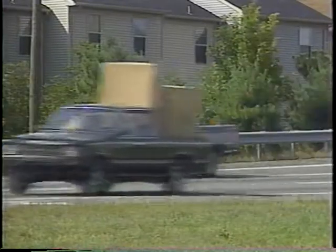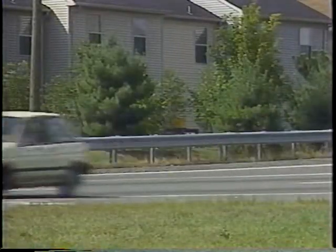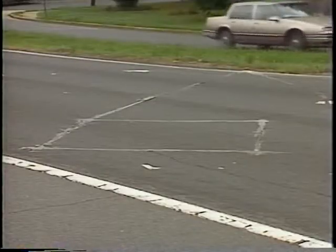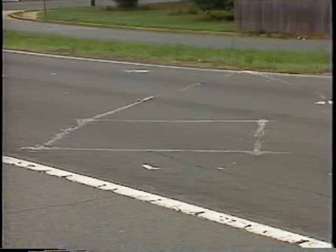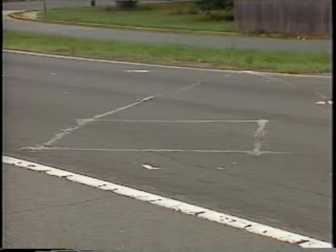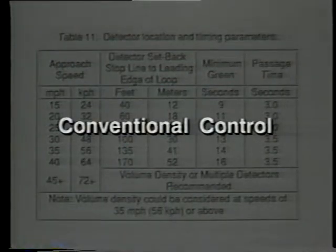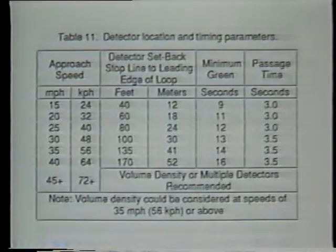In the non-locking mode, the controller forgets or drops the waiting call as soon as the vehicle leaves the detection area. Locking detection memory is associated with small area or point detectors, such as a six-by-six-foot loop detector. Often referred to as conventional control, locking memory with point detection includes a preset minimum green interval and a common value passage time.